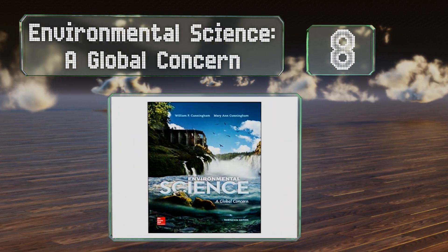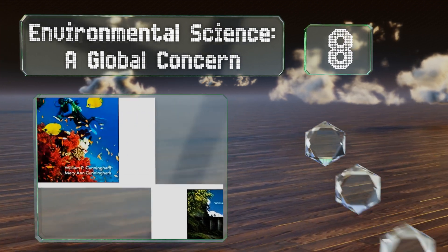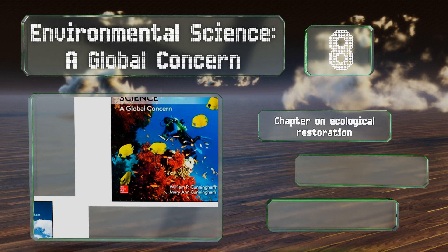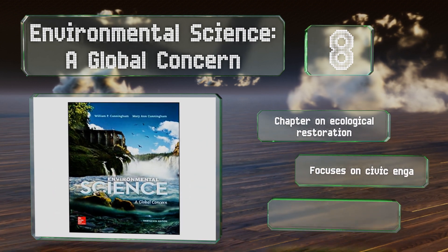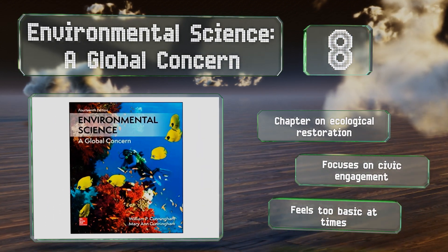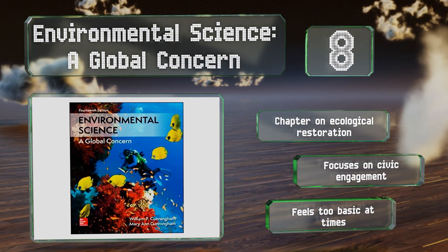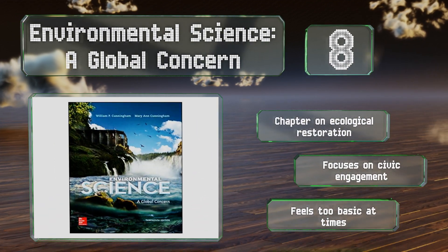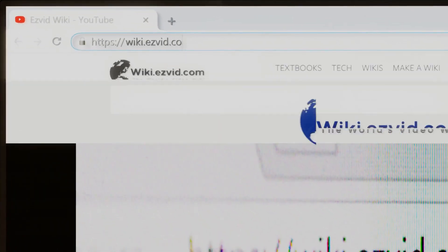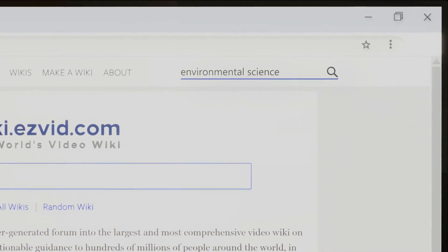Coming in at number 8, 'Environmental Science: A Global Concern' was created with non-majors in mind, with writing that's accessible to both undergraduates and high schoolers in advanced placement classrooms. It pushes readers to envision solutions to common environmental woes, includes a chapter on ecological restoration, and focuses on civic engagement. However, it feels too basic at times.